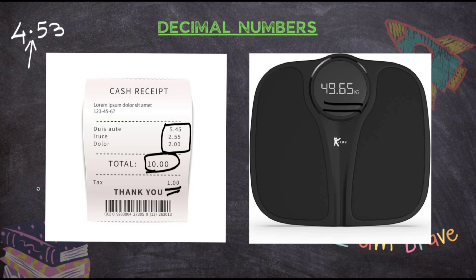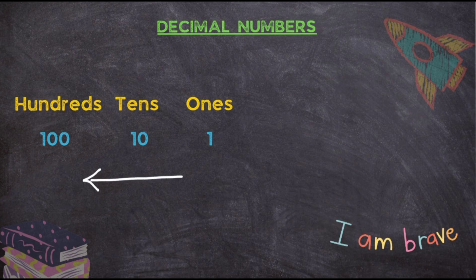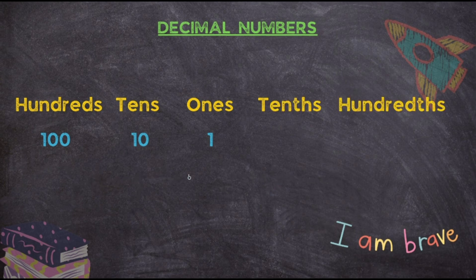Now you must be wondering where did this decimal point come from. As per the number system — be it Indian or international — you are aware of the places: ones, tens, hundreds, and so on, with place values 1, 10, 100. You may have never seen anything decimal in this number system, so where did it come from? You are aware of the places on the left-hand side of the place value system, but not of what lies to the right — and that's where decimal numbers come from.